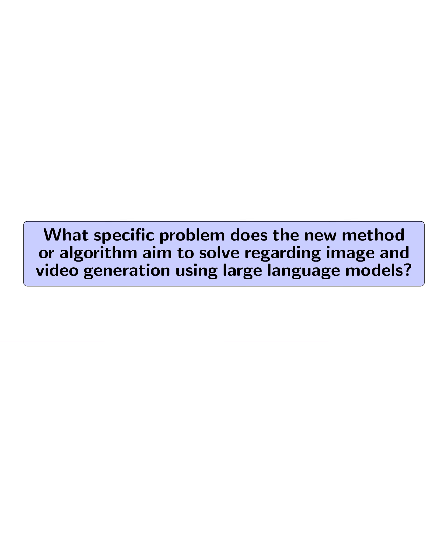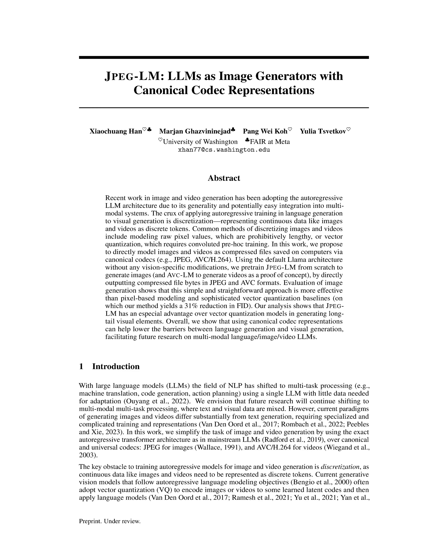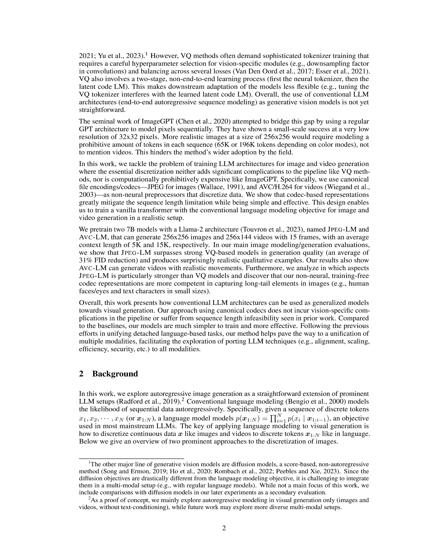What specific problem does the new method or algorithm aim to solve regarding image and video generation using large language models? The new method aims to address the challenges associated with discretizing continuous data for image and video generation using LLMs. Traditional approaches, such as vector quantization (VQ), require complex tokenizer training and a two-stage learning process, which complicates model adaptation and flexibility.